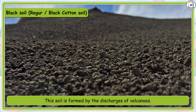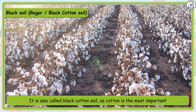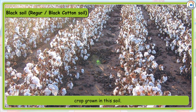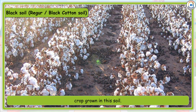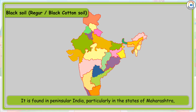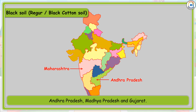Black soil is formed by the discharges of volcanoes. It is also called black cotton soil as cotton is the most important crop grown in this soil. Black soil is known for its capacity to hold moisture and is rich in magnesium and iron. It is found in peninsular India, particularly in the states of Maharashtra, Andhra Pradesh, Madhya Pradesh, and Gujarat.